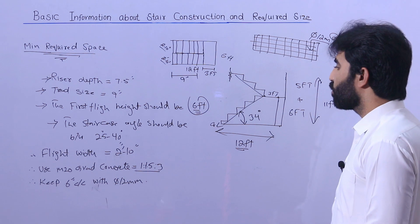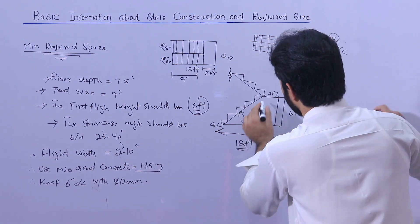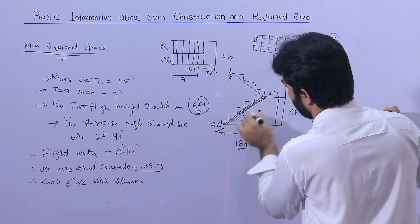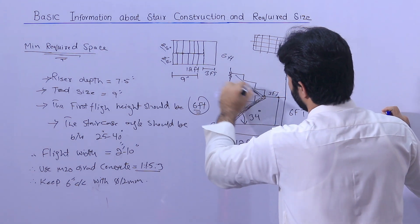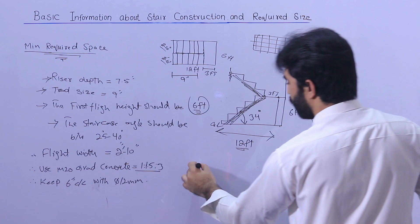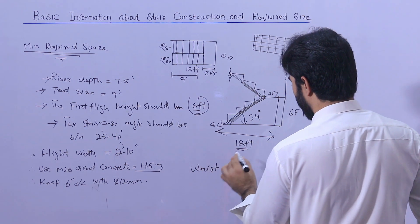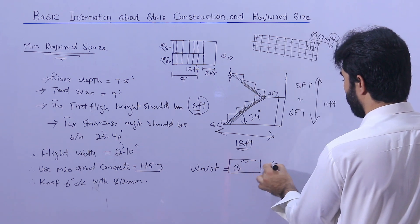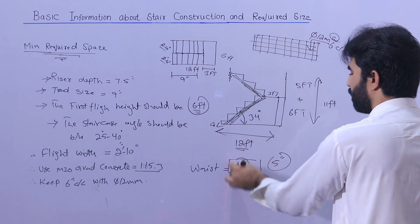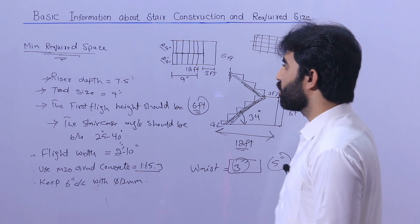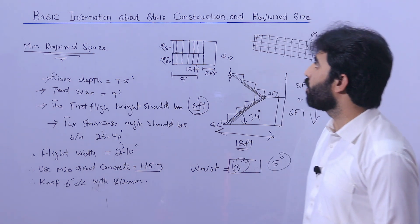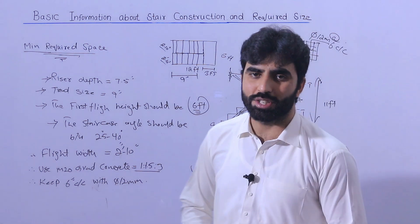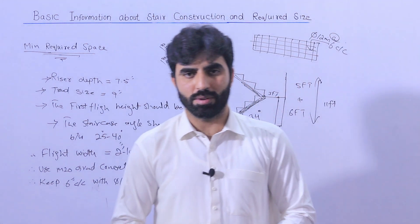Next, the waist slab: the minimum waist thickness should be 3 inches — it should not be less than this. Normally you can keep up to 5 inches, but 3 inches is the minimum. This has been a short video covering basic information about stair construction and its required space. Thanks for watching — see you in the next video, goodbye.